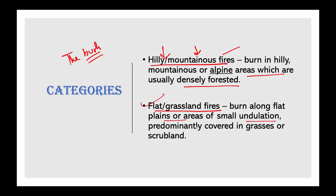Another category is flat grassland fires, which burn along flat plains or areas of small undulation predominantly covered in grasses or scrubland. These fires can move very quickly, fanned by high wind speeds across flat topography, and they quickly consume the small amounts of fuel vegetation available. These fires pose less of a threat to settlements as they rarely reach the same intensity seen in major firestorms. The terrain is more accessible for firefighting personnel, and many regions of predominantly flat terrain in Australia have been almost completely deforested for agriculture, which reduces the fuel loads.